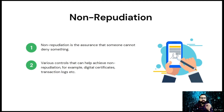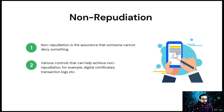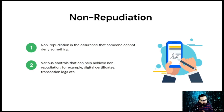Another example is that a person could send a threatening email to a colleague and simply deny that he sent the email — this is a case of repudiation. However, had the email been digitally signed, the person would not have had the chance to deny his actions.